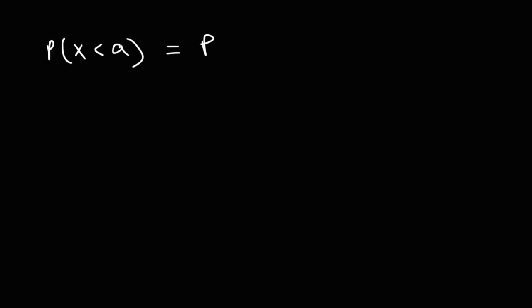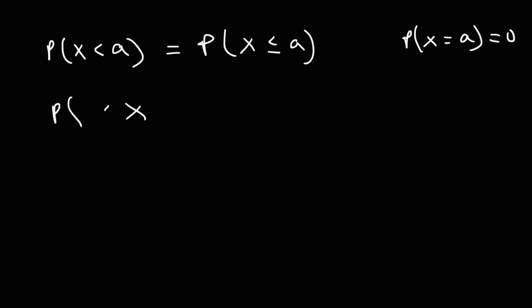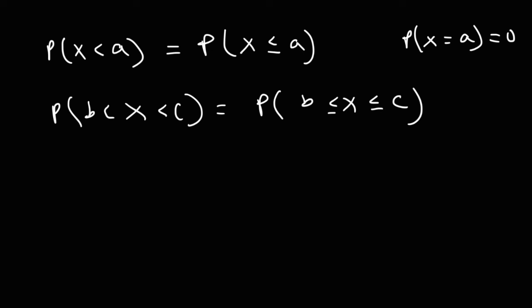Another thing to keep in mind: the probability that x is less than A is the same as the probability that x is less than or equal to A, because the probability that x equals A is 0. So less than and less than or equal to are equivalent. Similarly, the probability that x is between B and C is the same as the probability that x is greater than or equal to B but less than or equal to C.